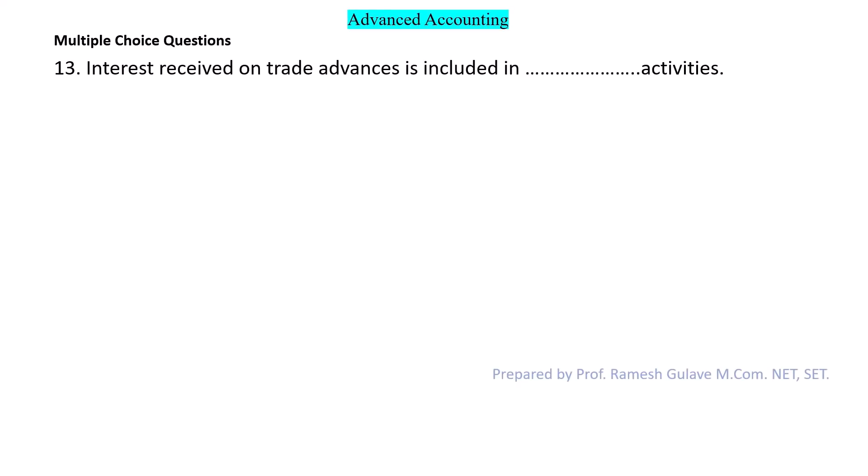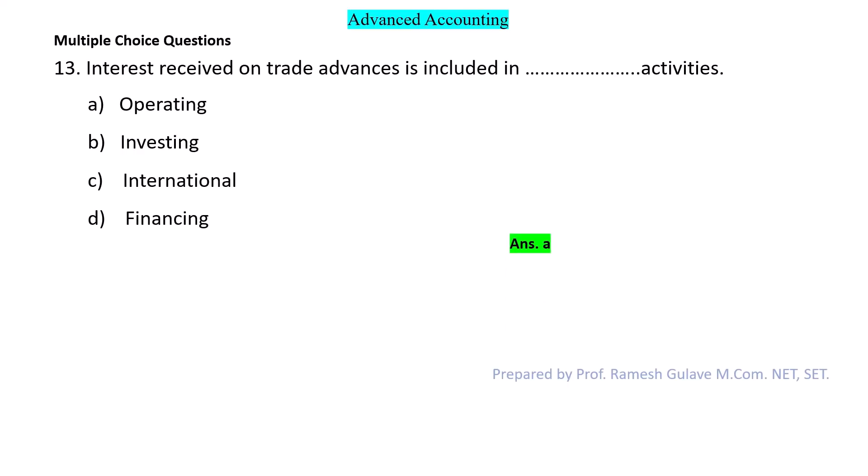Next question: Interest received on trade advances is included in which activities? During the course of trade, if a firm gave some advance and received interest on it, it is included in operating activities because it is in the normal course of business. So the answer is option A: operating activities.